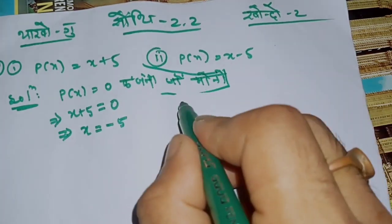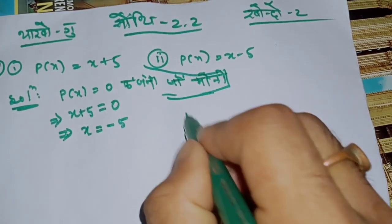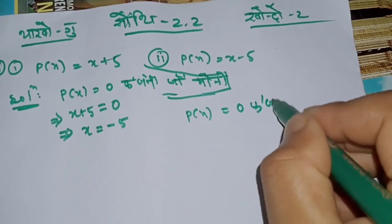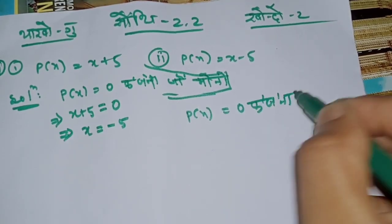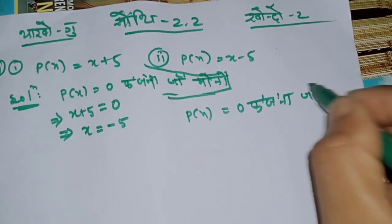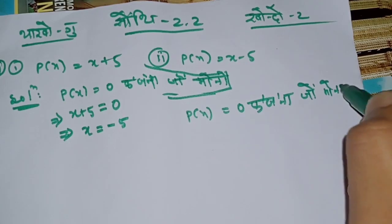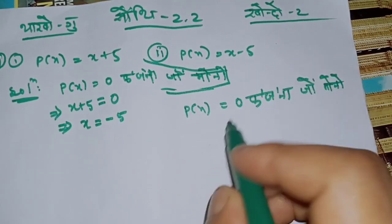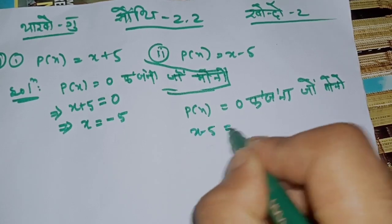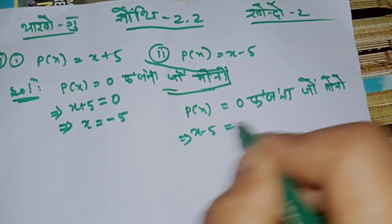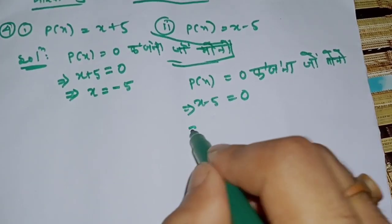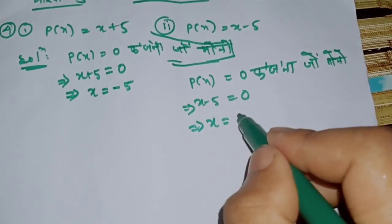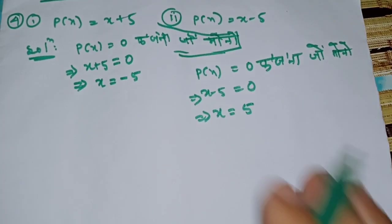Here we will add the 2x. 3x is equal to 0. 4x is equal to 0.